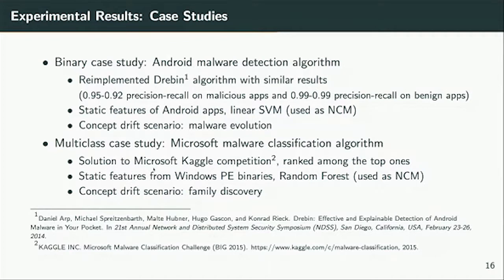We wanted to evaluate existing approaches that achieved very high and good results. For Android malware detection, the underlying algorithm is called Drebin, published at a top-tier venue in computer security in 2014. We implemented the algorithm and got access to the dataset the authors provided. Features are statically extracted from Android applications, using an underlying linear SVM. Precision and recall for the positive (malicious) class are 0.95 and 0.92 respectively, which is pretty good, and these are the reference numbers we want to keep.